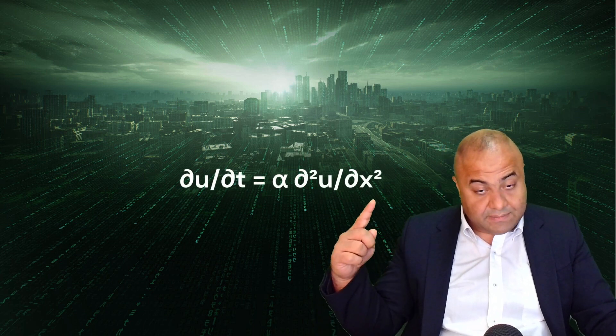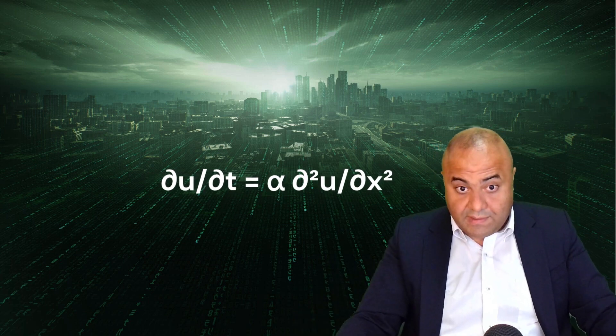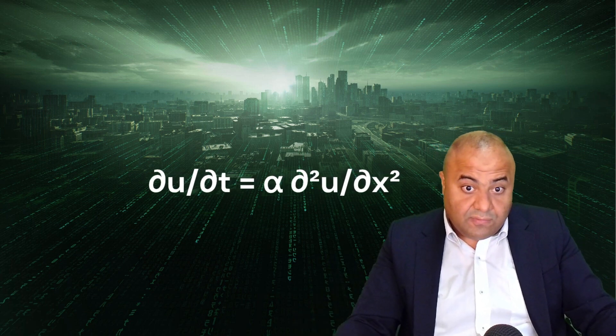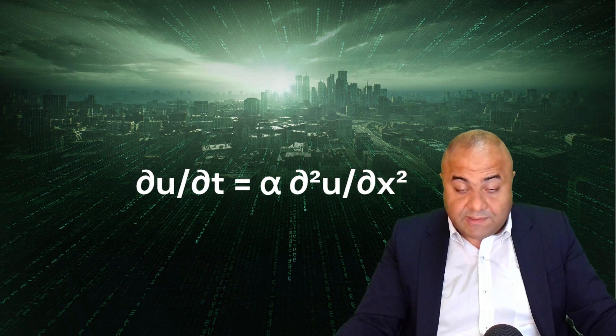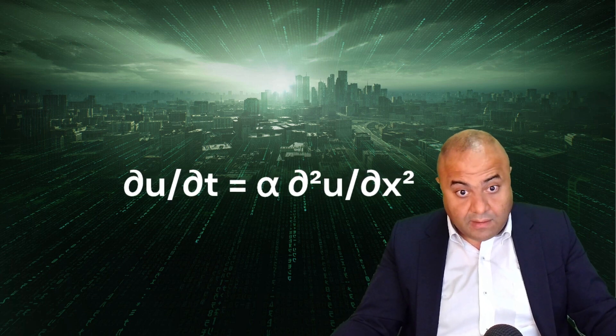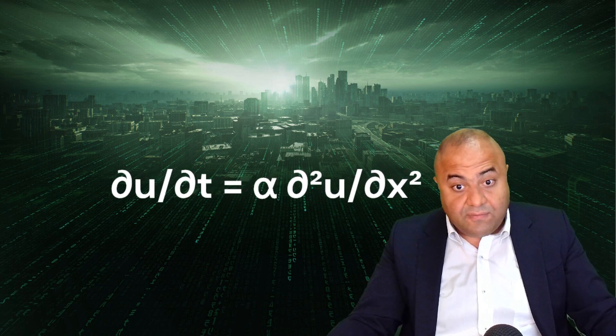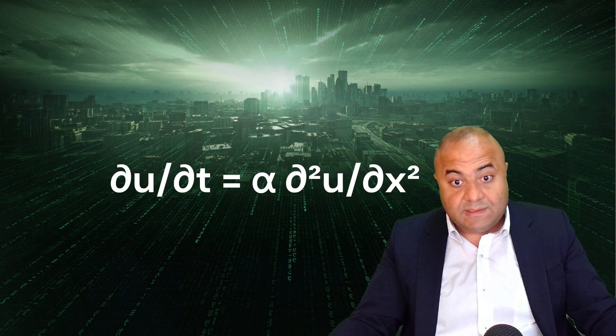The general form of the equation is: ∂u/∂t represents the rate of change of temperature with respect to time, α is the thermal diffusivity, a material-specific property that governs how heat spreads into the medium,